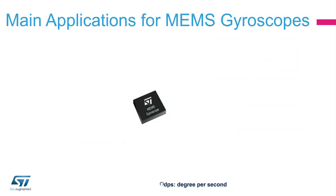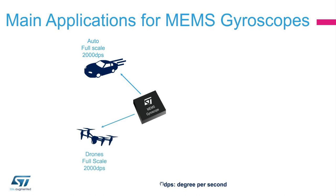Gyroscopes were once too big, too power-hungry, and too expensive for consumer applications. Recent MEMS gyroscopes have paved the way to a completely new set of innovative applications. They can be used to implement new, advanced user interfaces and give the user an improved gaming experience. For these applications, a full-scale range of thousands of degrees per second, or DPS, is required to capture the player's rapid movements.